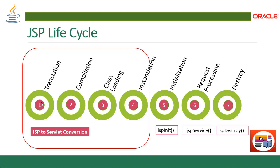The second step is compilation. Once translation is done, when the browser asks for a JSP, the JSP engine checks whether it needs to compile the page. If the page has never been compiled, or if the JSP has been modified since it was last compiled, the JSP engine compiles the page — it parses the JSP, turns it into a servlet, and compiles the servlet. Now the servlet is in class form.